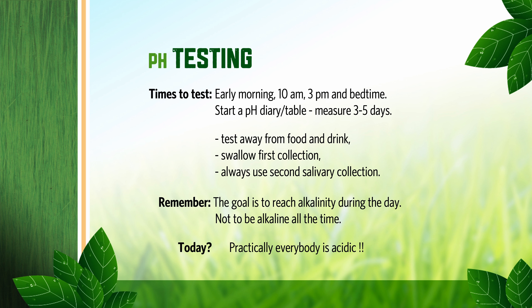Collect saliva and swallow the first collection. Then milk your glands again and measure the second collection. Record the reading — write it down on a little table. It is normal to start the day acidic; your body has worked overnight to metabolize waste. As long as you see trends towards more neutral levels, hopefully around pH 7 throughout the day. But most of us hover around pH 5 to 5.5 all day long, and that's not good.